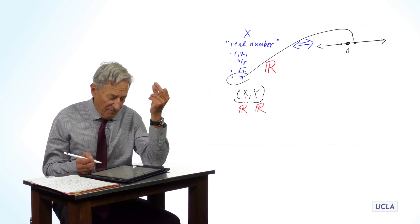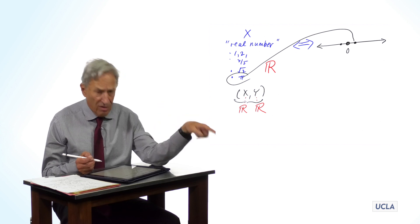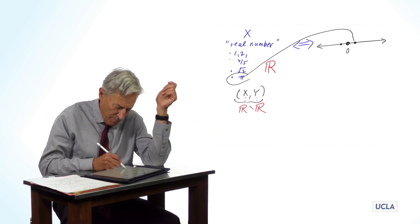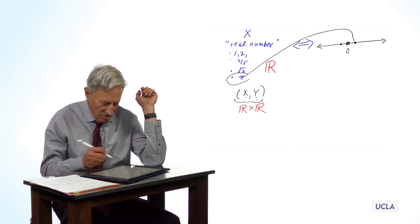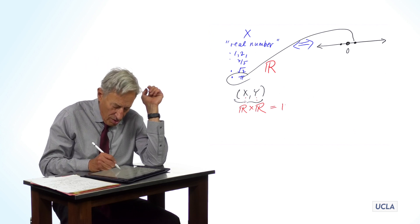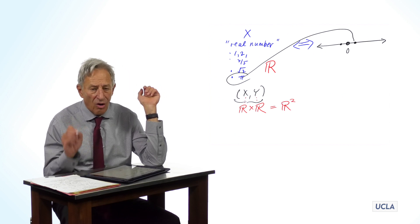And the set of all such pairs, x, y, with x in R and y in R, has a name. It's called R cross R, or R squared, or R2.